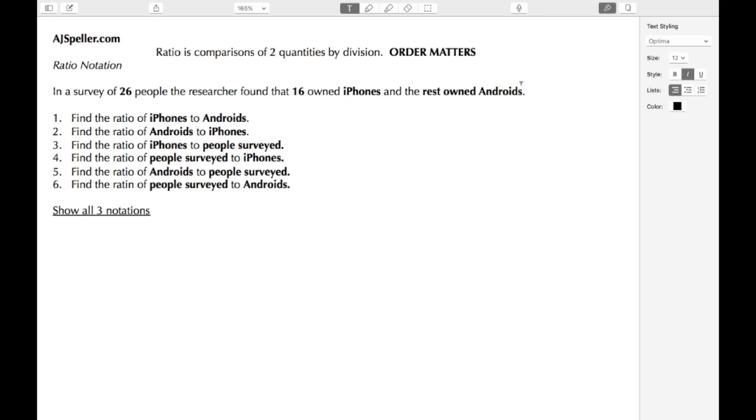Another thing to know is that these ratios are going to come in three types of groupings. One grouping is going to be part to part, we're comparing a part to a part.